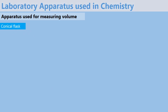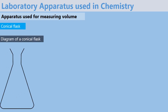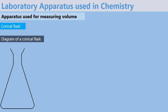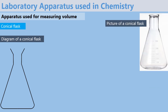The next apparatus used for measuring volume is known as the conical flask. This is a diagram of a conical flask, and here is a picture of a conical flask. Again, you can observe the graduations.